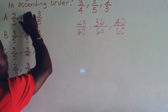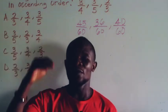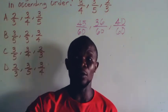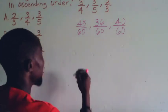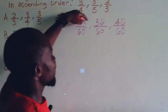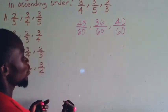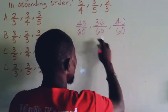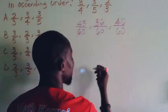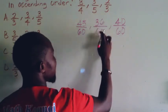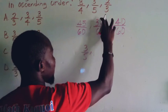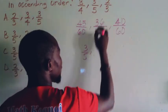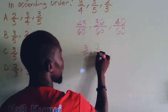When we talk about ascending order, it means arranging numbers from smallest to largest. Looking at the numerators 45, 36, and 40, the smallest is 36. So 36 over 60, which is 3/5, comes first. After 36 we have 40, which is 2/3.